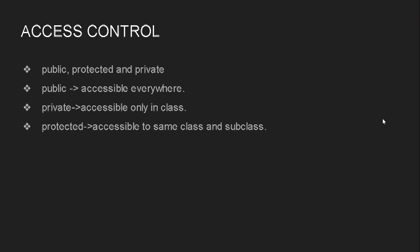Let's first talk about access control. We have already studied a little bit about access control in previous tutorials. These are keywords that define access control — also known as access modifiers. There are three: public, protected, and private. Public means it is accessible everywhere. Private means the methods and member functions are accessible only within the class in which they are defined. Protected means functions and variables are accessible in the same class and its subclasses.